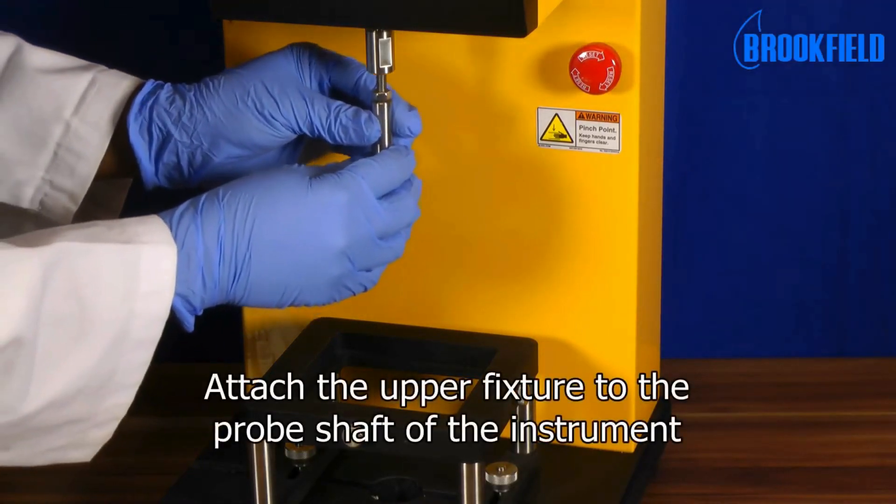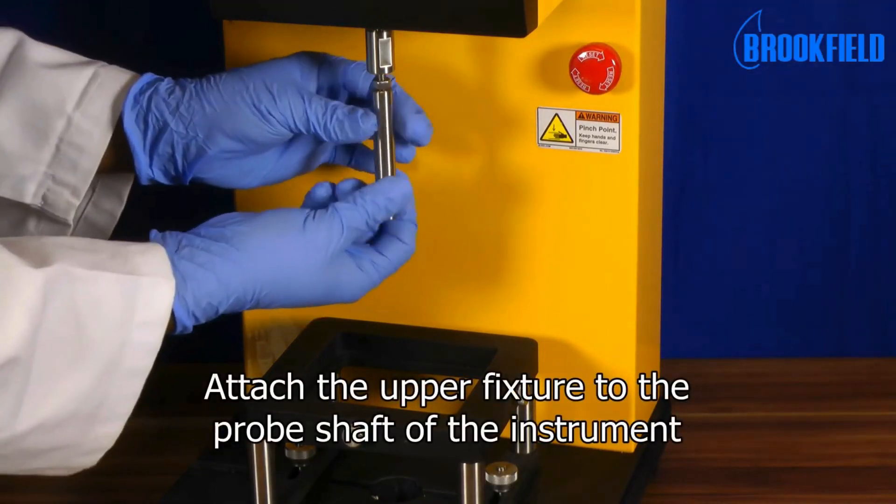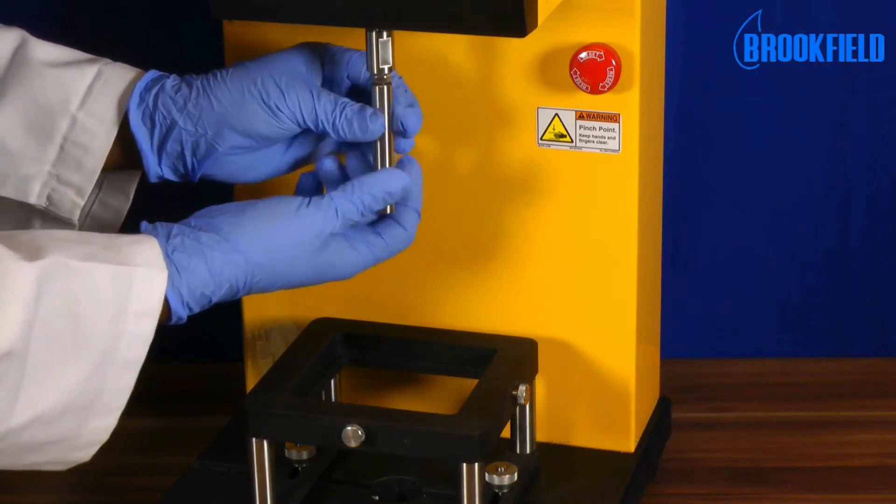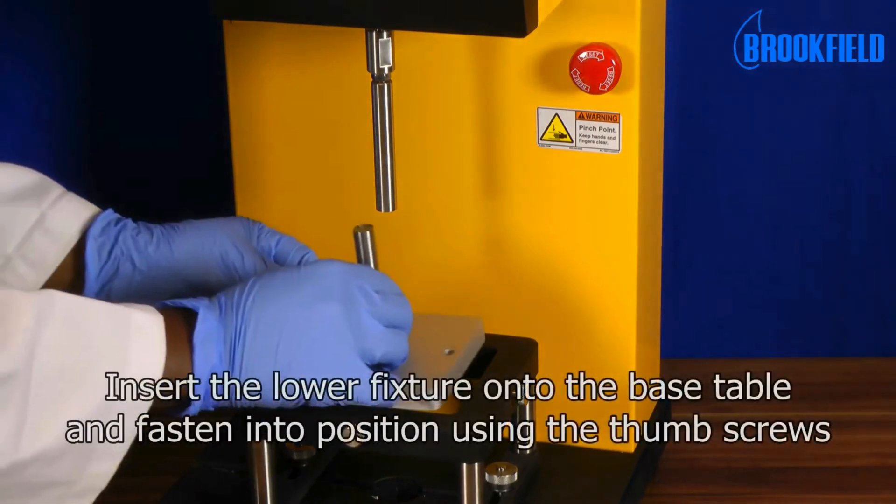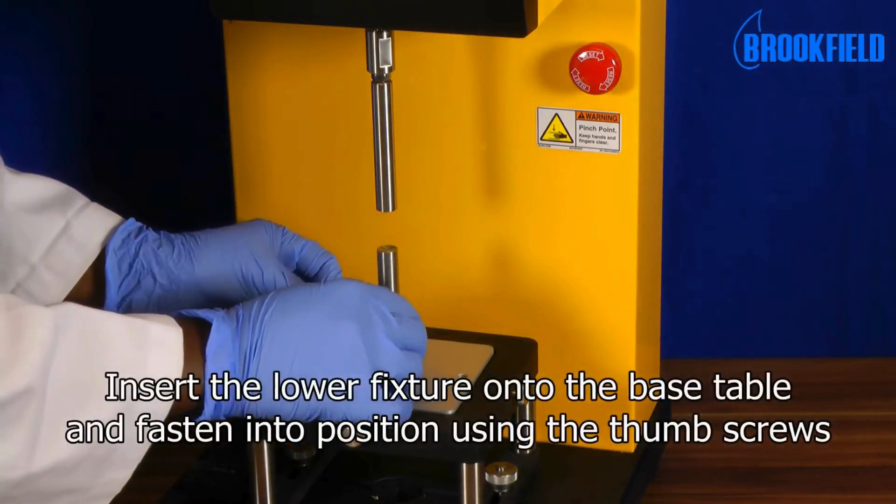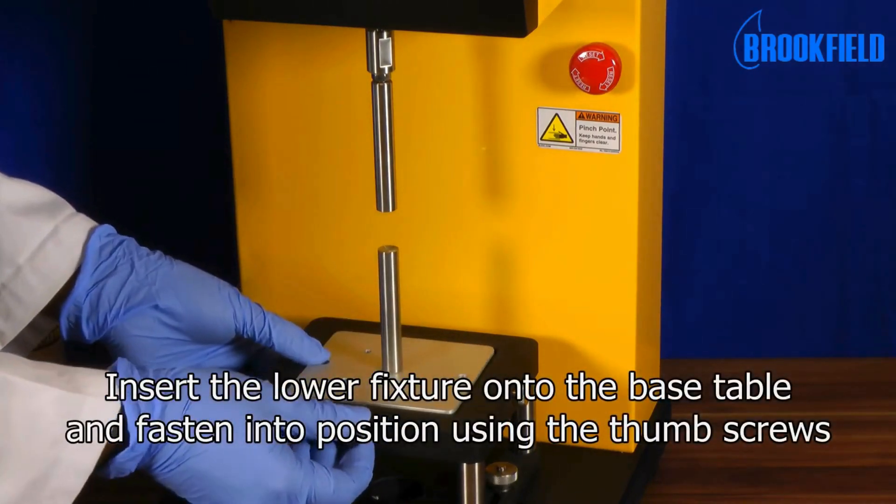To set up the test, attach the upper fixture to the probe shaft of the instrument. Insert the lower fixture onto the base table and fasten into position using the thumb screws.